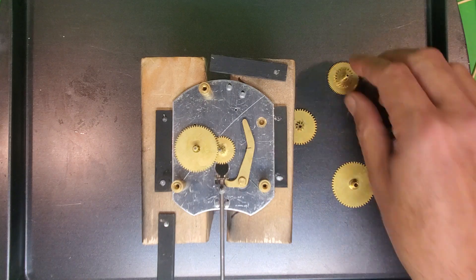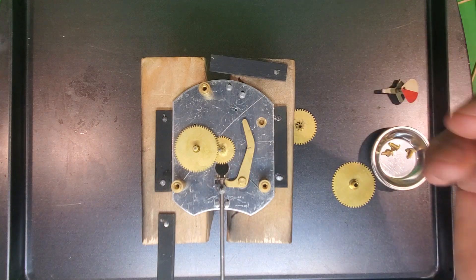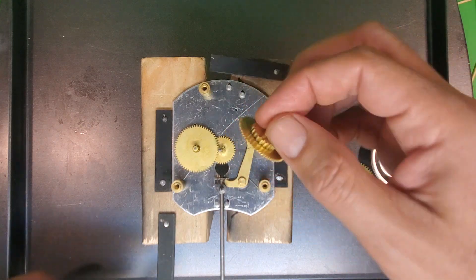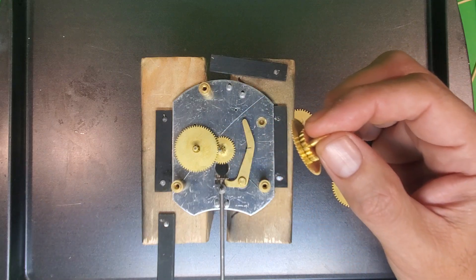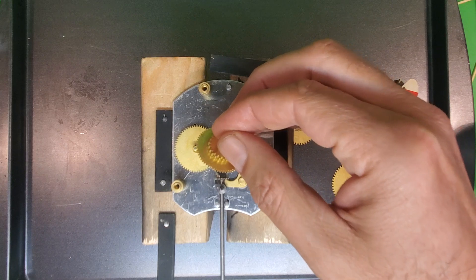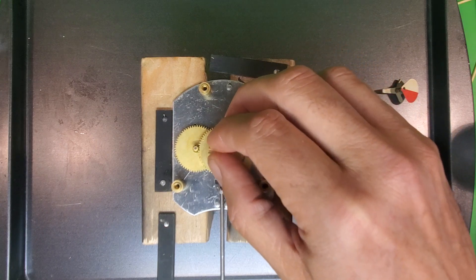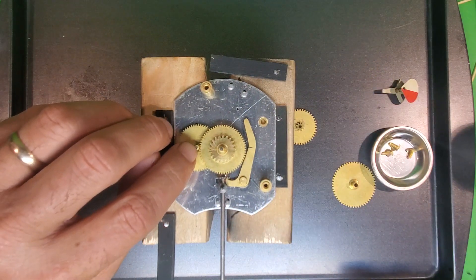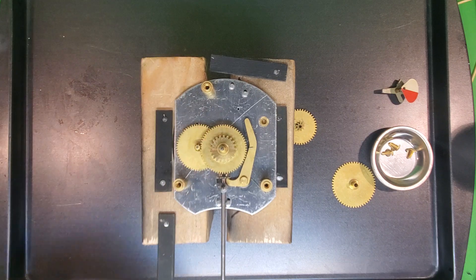Next thing we're going to do is put on schematic number 5, the minute-hand sleeve. We're going to put that right on top of the sweep second-hand shaft. And now these gears should mesh, the small ones here and the larger ones there.